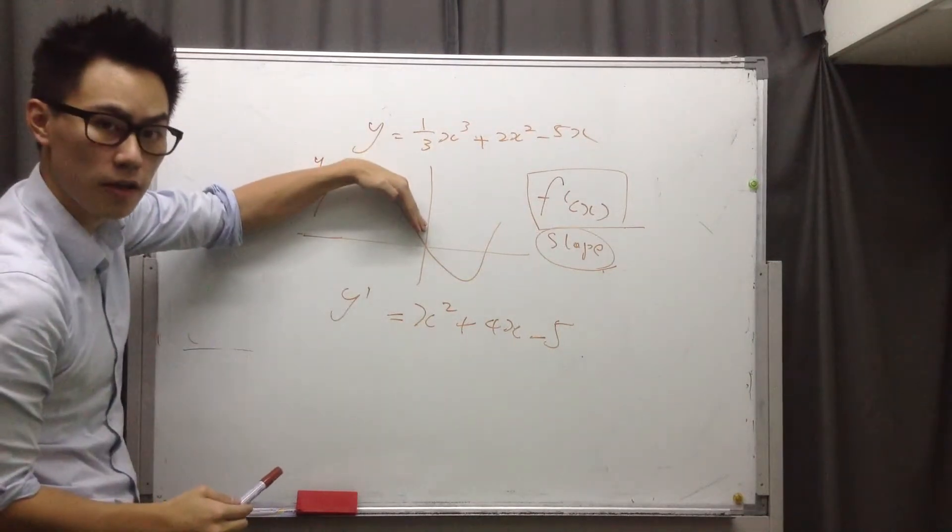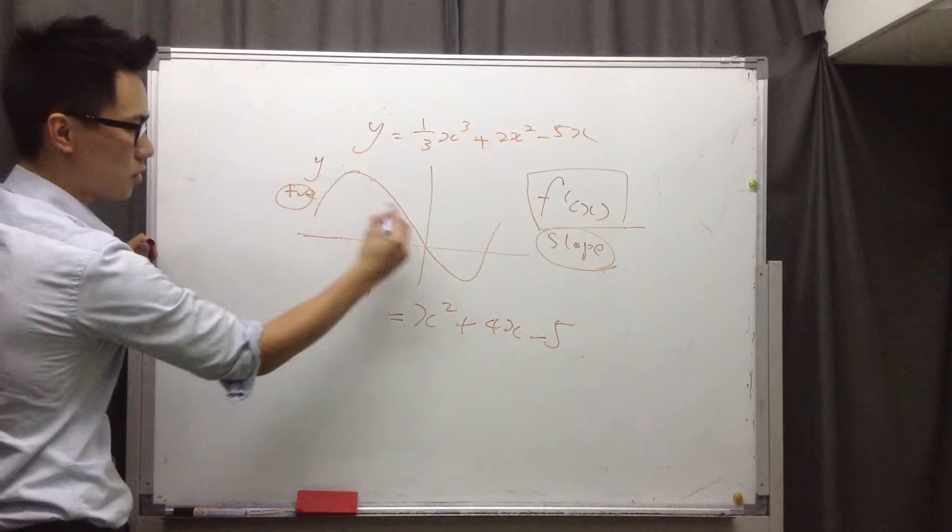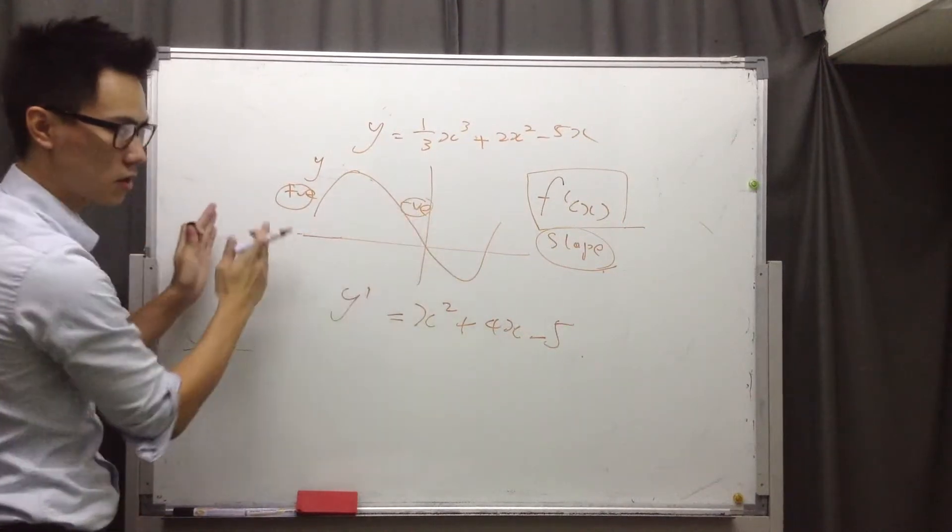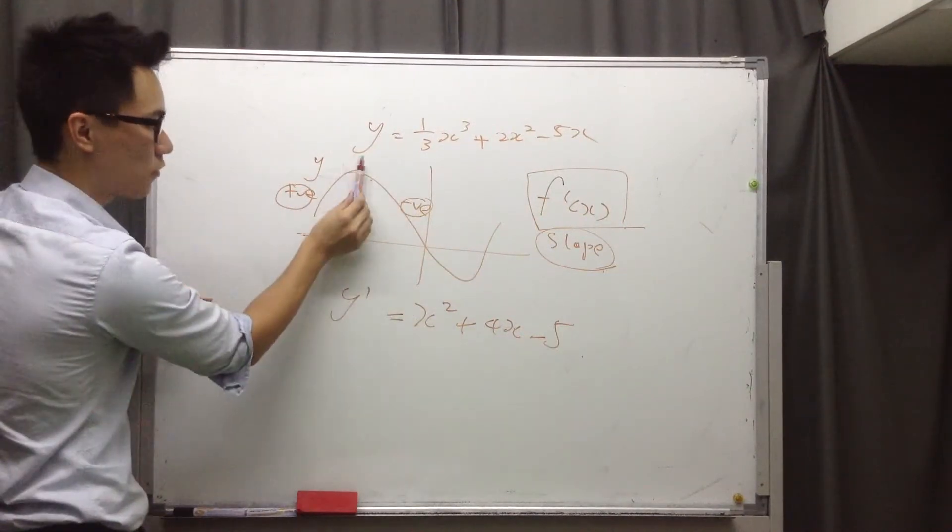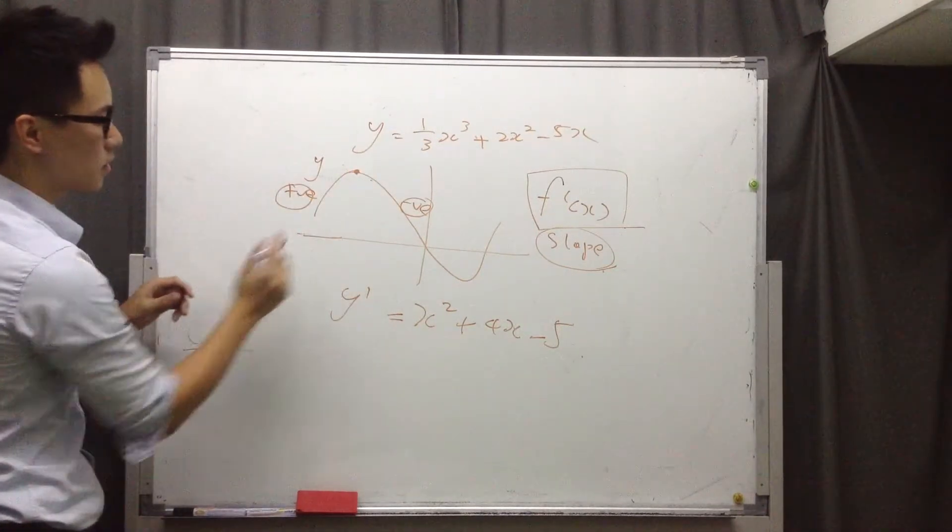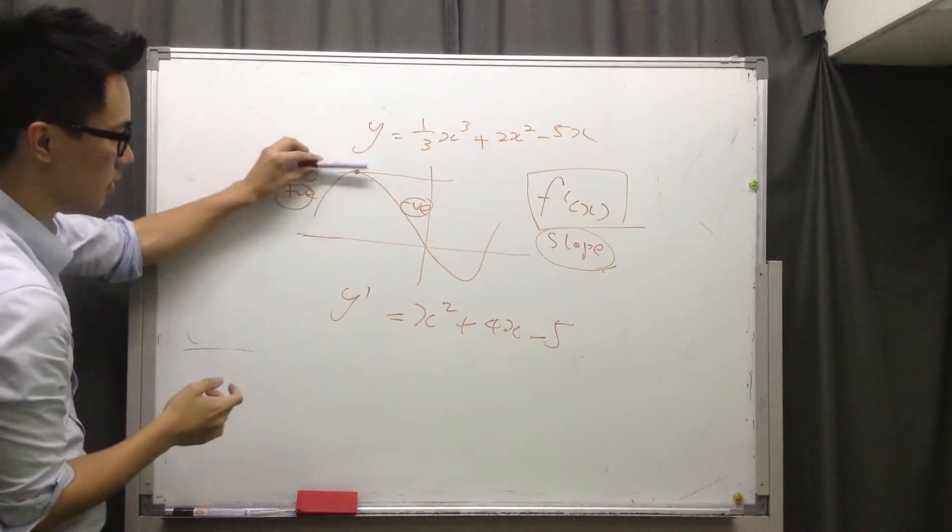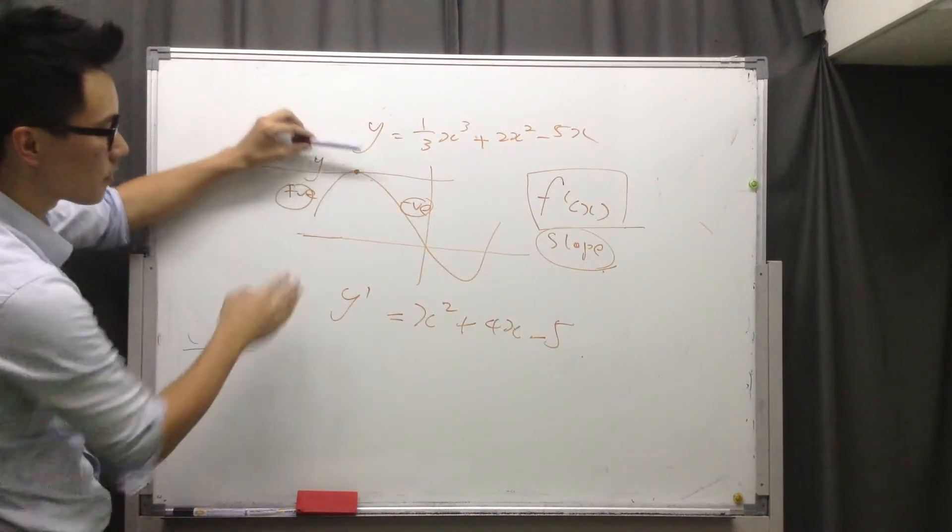So from positive, the slope from positive to negative, it must go through, pass through the zero. So which is this one. So this line, the slope of tangent at this point, I mean, must be zero.